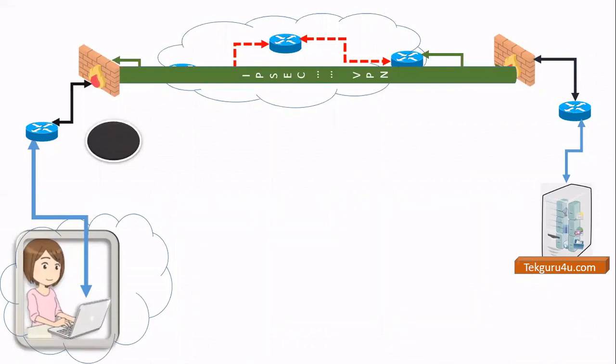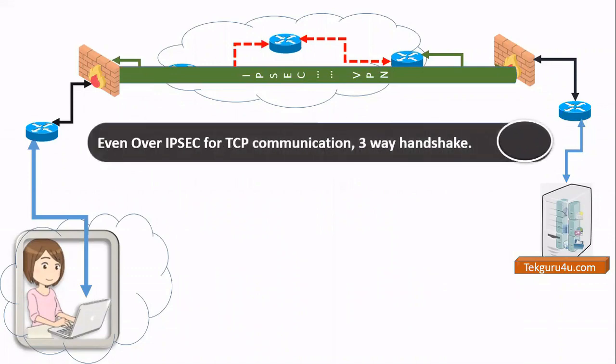I have taken another example of IPSec VPN. Even if it is IPSec VPN, 3-way handshake will still happen, because IPSec VPN is just connecting two offices and giving you a secure communication channel. The packets going through it — suppose you're accessing techguru4u.com — will go over TCP and 3-way handshake will happen. We need a browser to open websites and those use HTTP or HTTPS, and the communication media required for HTTP and HTTPS is TCP.